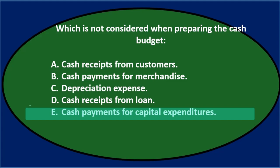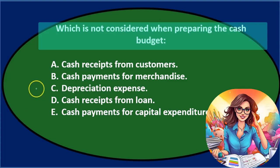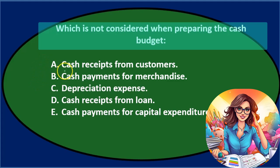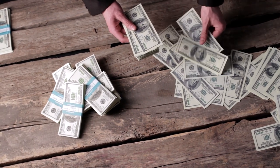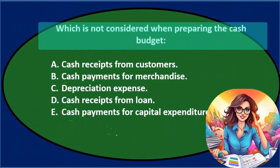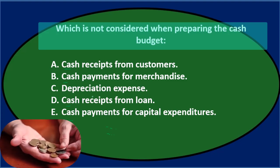Let's go through this again using the process of elimination. Which is NOT considered when preparing the cash budget? Notice that most options start with the same word — cash. Cash Receipts, Cash Payments, Cash Receipts, Cash Payments. That's what a cash budget does — we have cash receipts and cash payments. So many times cash is being received or paid, and it would be on the cash budget because cash is involved.